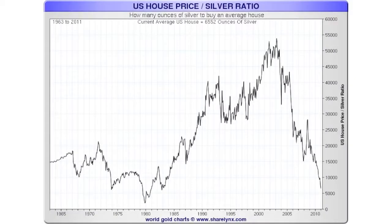The first chart is the one that literally got me to bet the house on silver in 2005. When I got out, the ratio was 42,000 ounces of silver for the average house. Now it is close to 6,000 ounces for the average house. Using the ratio, so far the real purchasing power of silver has gone up over 600%.